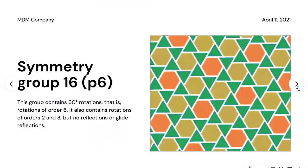Symmetry group sixteen is named P6. This group contains 60-degree rotations — that is, rotations of order six. It also contains rotations of orders two and three, but no reflections or glide reflections.